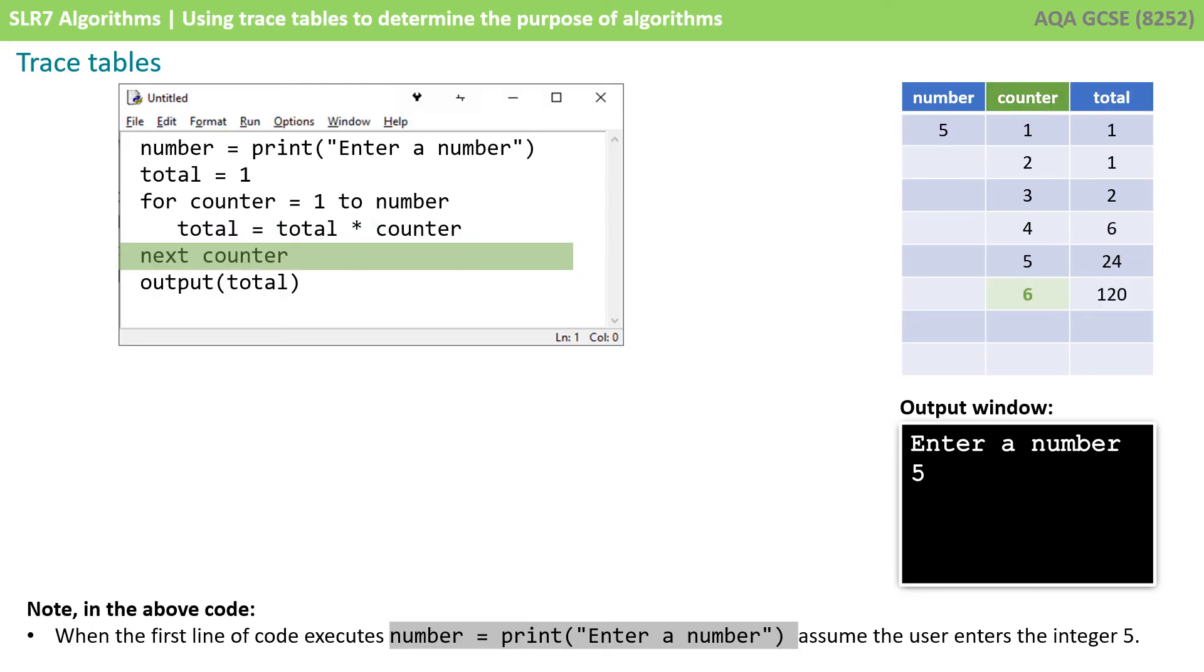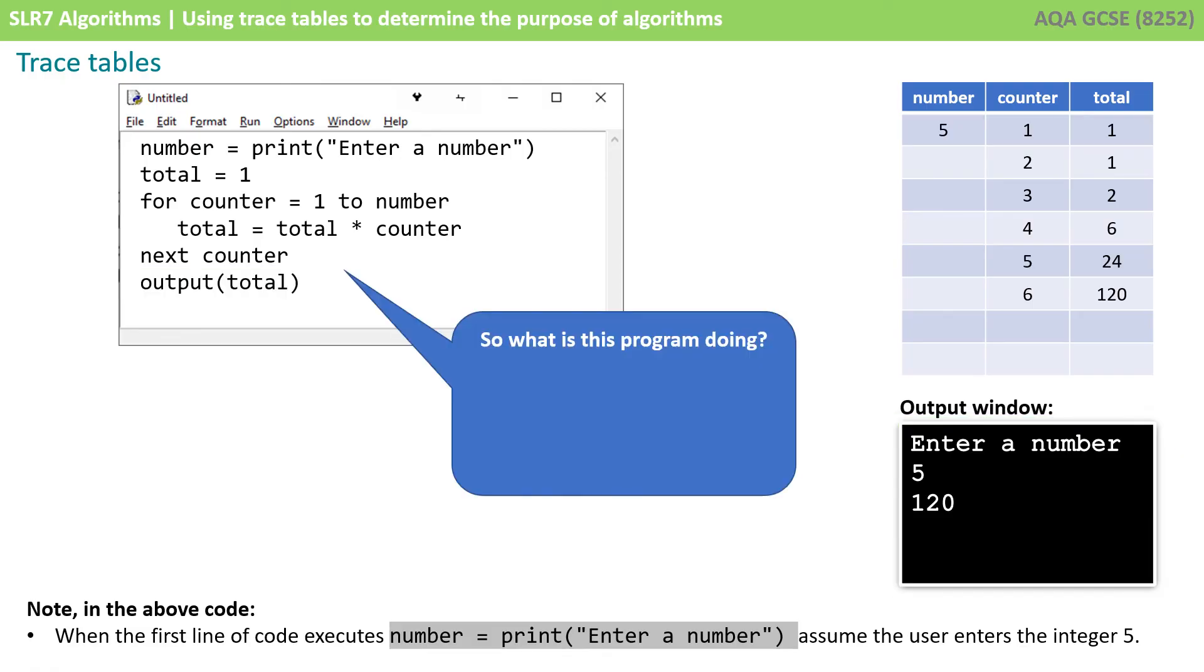We increment counter to six. We go back to the start of the for loop. For counter equals one to the value in number. Well, the value in number is five, counter is six. So now we do not execute the for loop, and we skip beyond the end of the for loop. And we output the value of total, which currently stands at 120.